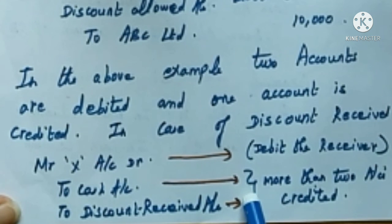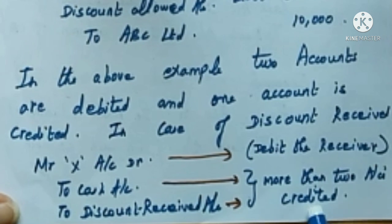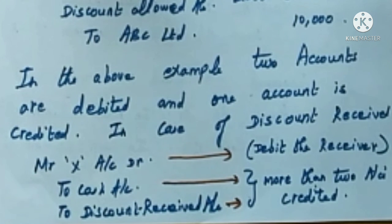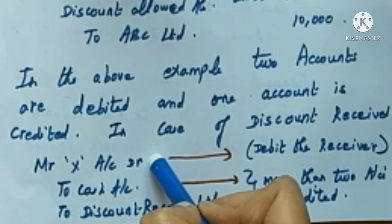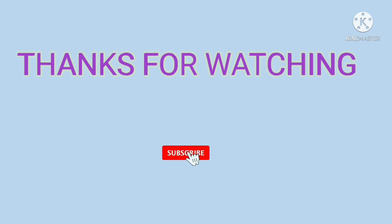Discount received is an income, so discount received account is credited as per the nominal account rule — credit all incomes and gains. On the debit side we have only one account — Mr. X — but on the credit side we have two accounts: cash account and discount received account. So there is more than one account on the credit side, making it a compound entry. Sometimes we may even have two accounts debited and two accounts credited — that is also a compound entry.